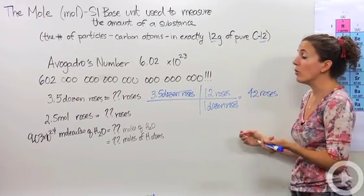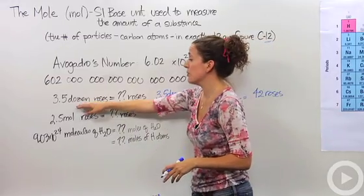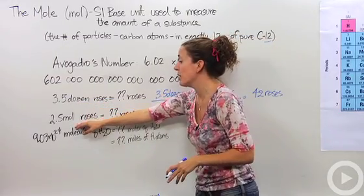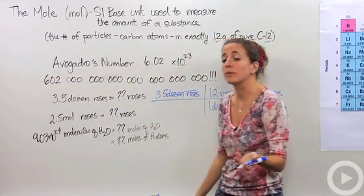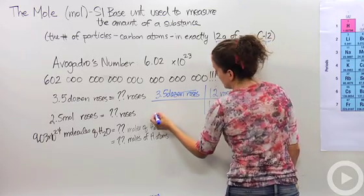Let's go in and start using the word mole. So let's say instead of 3.5 dozen roses, let's say we have 2.5 moles of roses. How many roses do we have? Well, let's do it again.